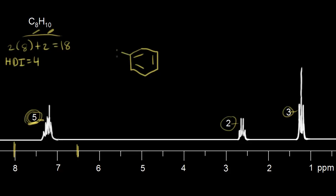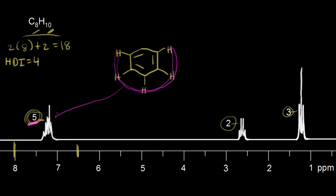Those must be five aromatic protons, so we can draw in five protons off the benzene ring. Even though those protons are in slightly different environments, since the integration is five and we know a benzene ring is present, we know those five protons are giving us this complicated signal.